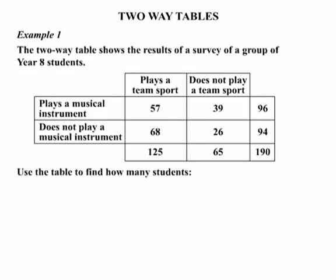We're asked to use the table to find how many students were surveyed — that's the total number of students. If we look right down the bottom right-hand corner of our table, we can see there were 190 students in total who were surveyed.